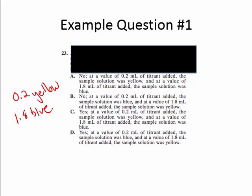The next step is to take this information and eliminate any answer choices in which the rationale is not factually correct. We determined that at 0.2 the solution was yellow and at 1.8 it was blue, so we can eliminate B and D entirely because they said it was blue at 0.2 and yellow at 1.8. Without ever having read the question, you can still take a 50-50 guess with what remains — choices A and C.